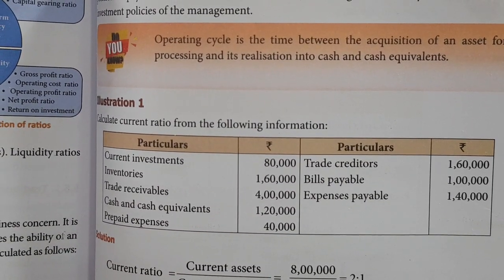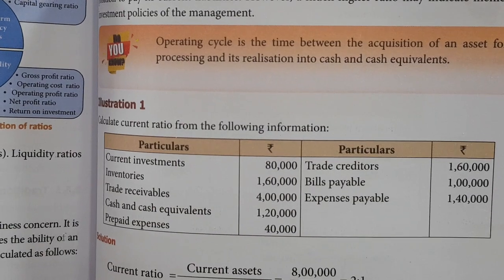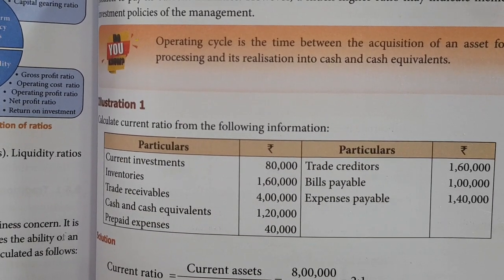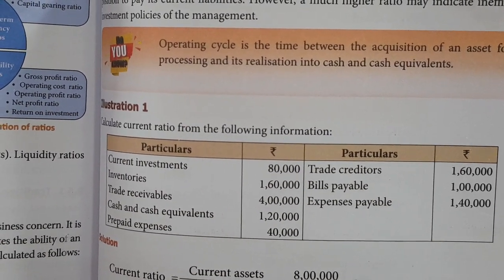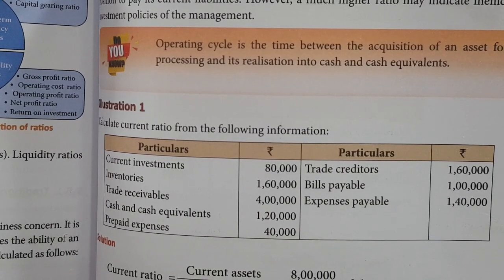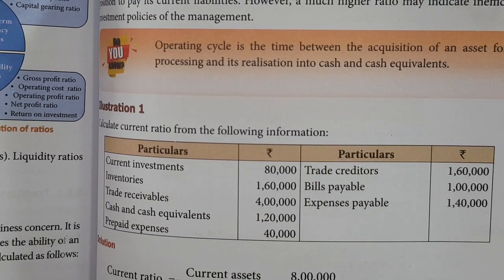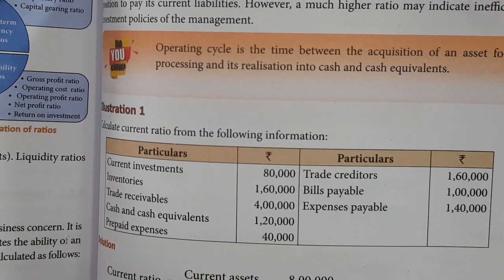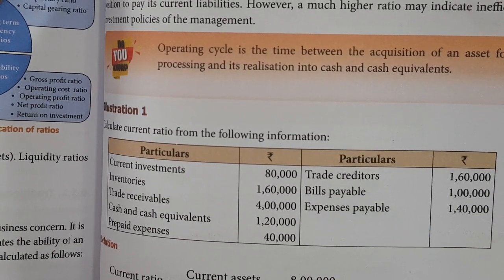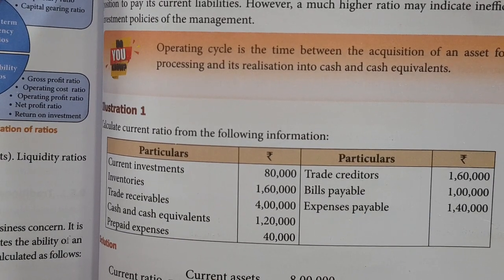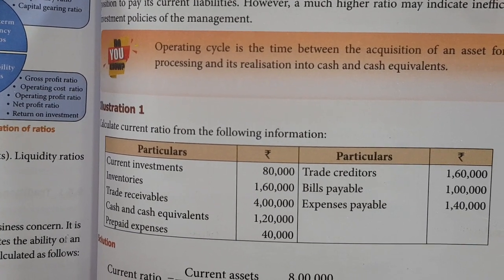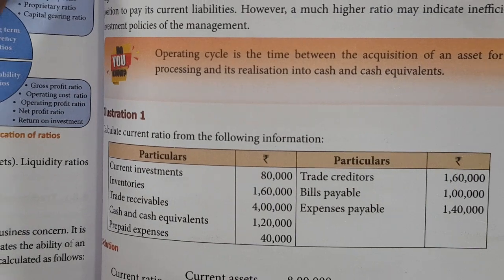Particulars: current investment 80,000; inventory 1,60,000; trade receivable 4,00,000; cash and cash equivalent 1,20,000; prepaid expense 40,000; trade creditors 1,60,000; bills payable 1,00,000; expense payable 1,60,000.